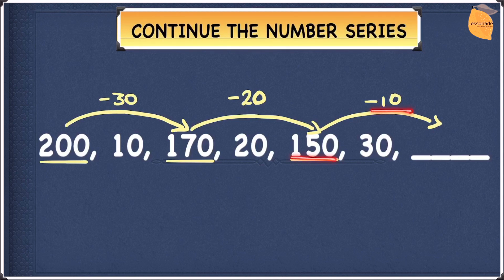150 take away 10 is going to be 140. So our answer is 140.